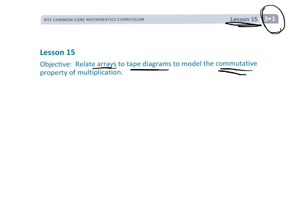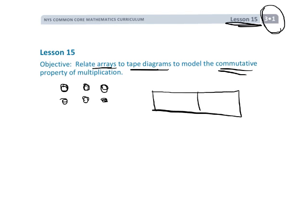What I mean by that is, let's say we have an array with two rows of three. That could be modeled as a tape diagram as two groups of three — so we'd put three dots in each box. Both of these represent two times three.